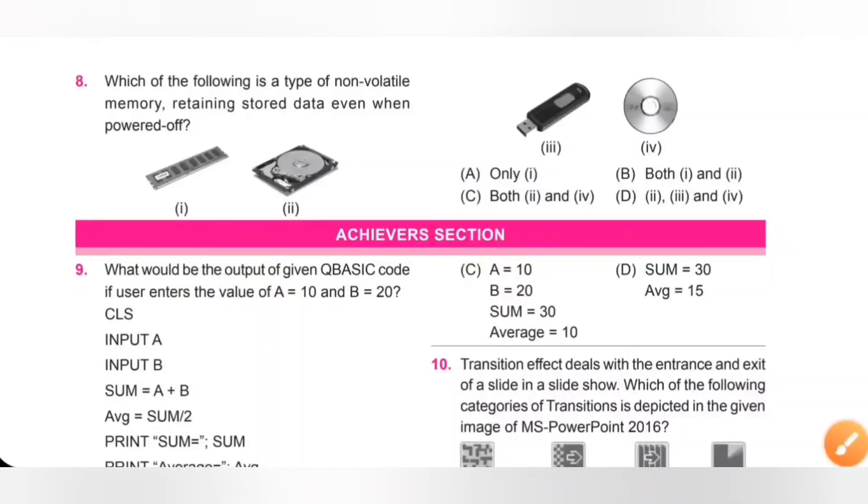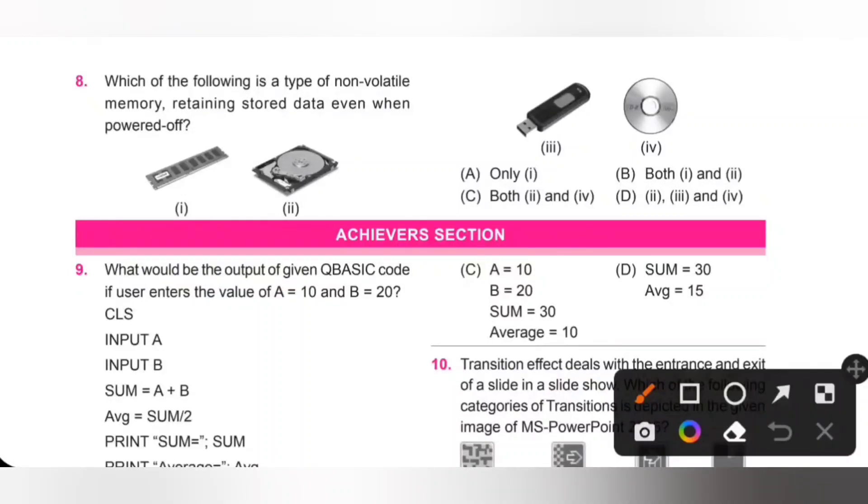Eighth one: Which of the following is a type of non-volatile memory retaining stored data even when powered off? One is RAM, it is not a non-volatile memory. RAM is a volatile memory. Two: hard disk, it is a non-volatile memory. Three: pen drive, also non-volatile memory. And CD drive, also non-volatile memory. So two, three, and four are non-volatile memory. Option D is the correct answer.